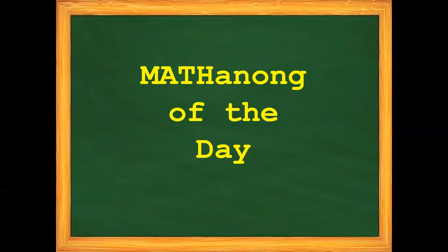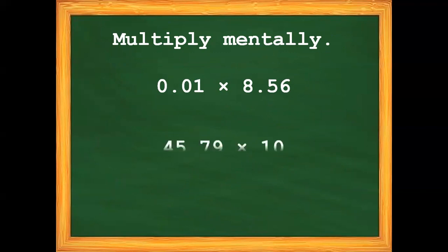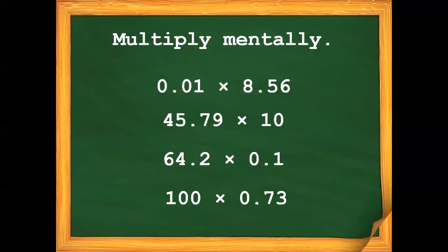For our matanong of the day, multiply mentally. Number 1: 100 times eight and 56 hundredths. Number 2: 45 and 79 hundredths times 10. Number 3: 64 and two-tenths. Number 4: 100 times seven and three hundredths.